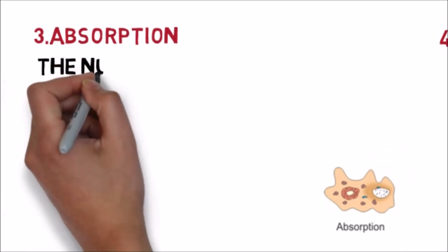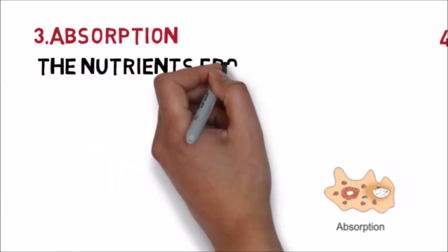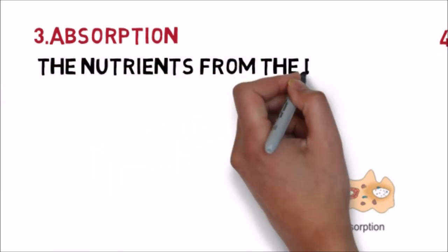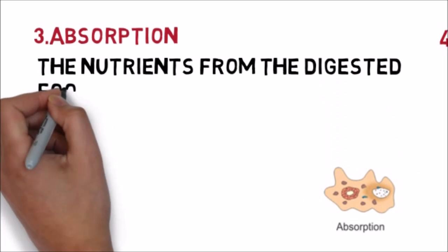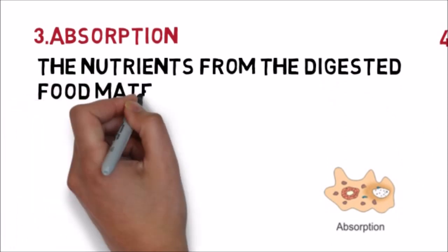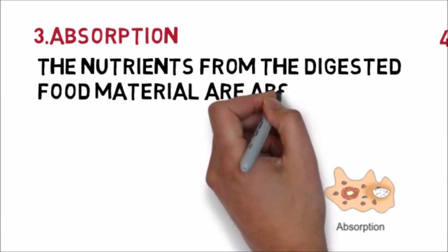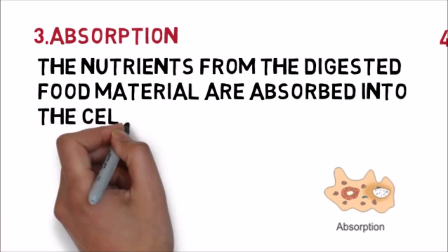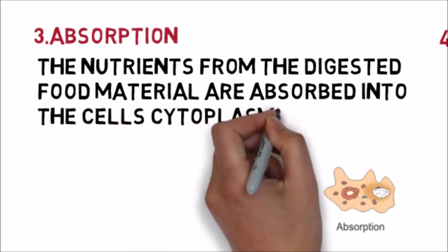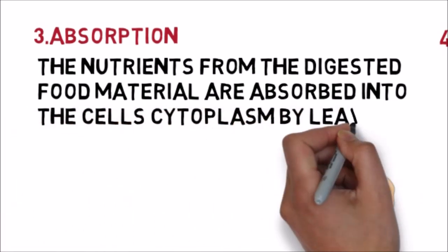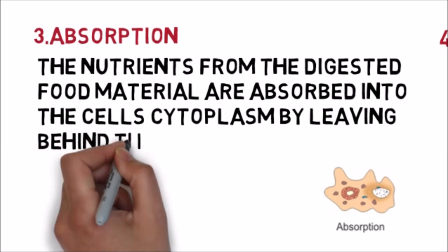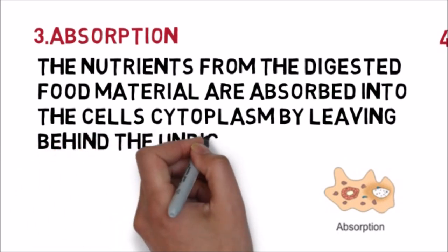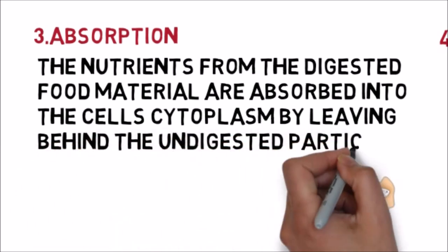The next process is absorption. After digestion, the nutrients are absorbed from the digested food into the cytoplasm by the simple process of diffusion. These nutrients are then stored in the form of glycogen and lipid.